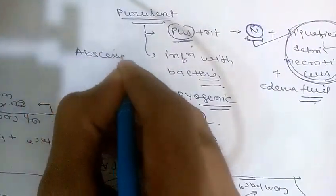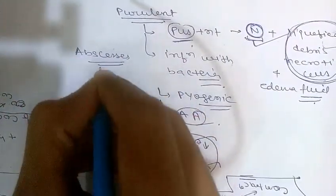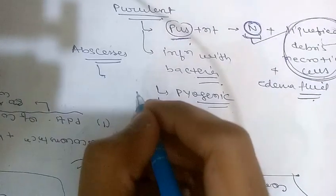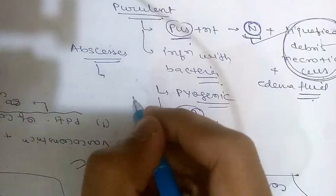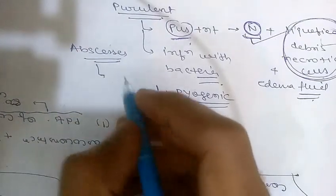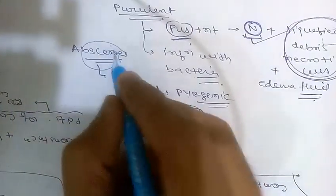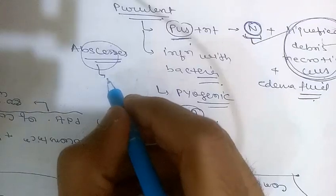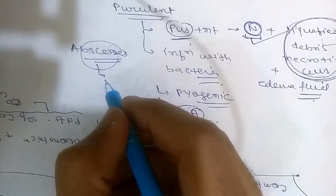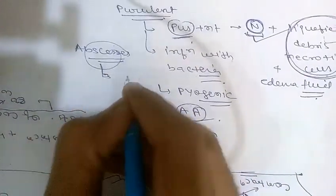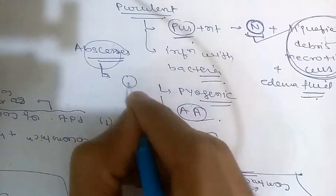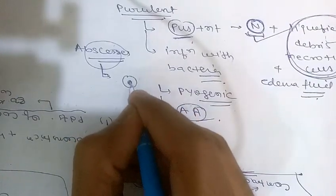An abscess is a localized collection of purulent inflammatory tissue caused by bacteria in a tissue, organ, or confined space. It is basically a collection of purulent inflammatory material with a central region that appears as a mass of necrotic leukocytes and tissue cells.